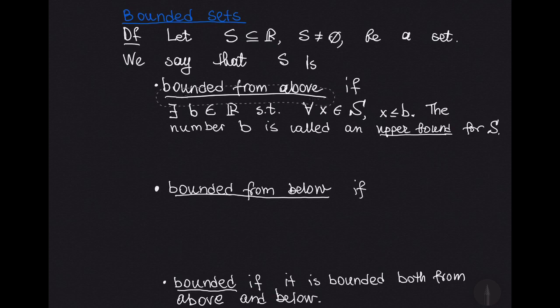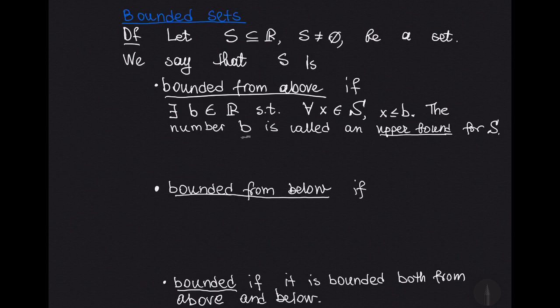Let s be a non-empty subset of ℝ. Then we say that this set is bounded from above if there is a real number b such that whenever we take an element in the set s, that element is going to be less than or equal to b. In this case we say that the number b is an upper bound for s.